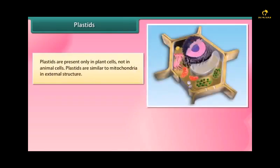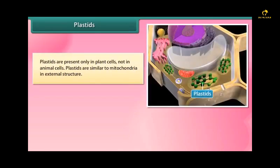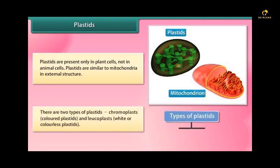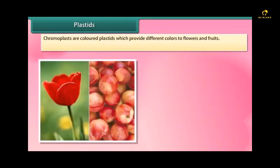Plastids are present only in plant cells, not in animal cells. Plastids are similar to mitochondria in external structure. There are two types of plastids: chromoplasts (colored plastids) and leucoplasts (white or colorless plastids). Chromoplasts are colored plastids which provide different colors to flowers and fruits.